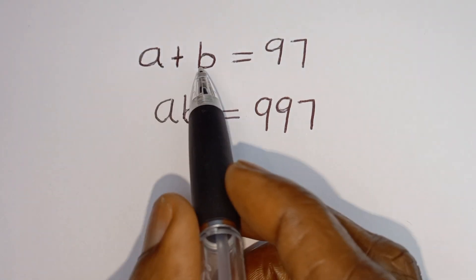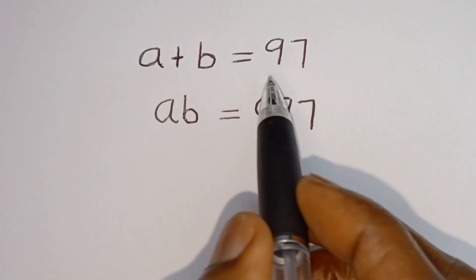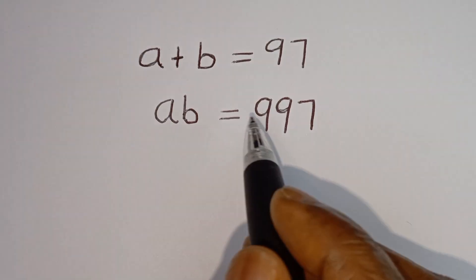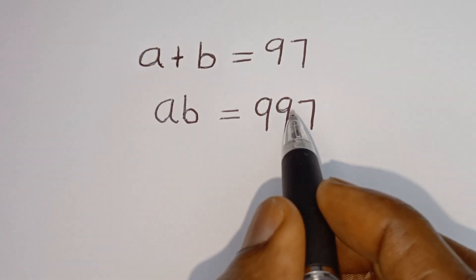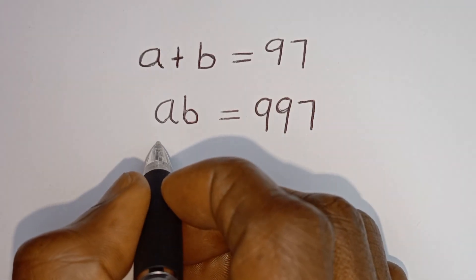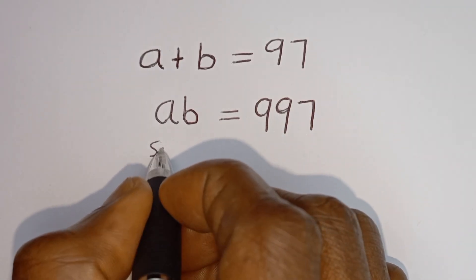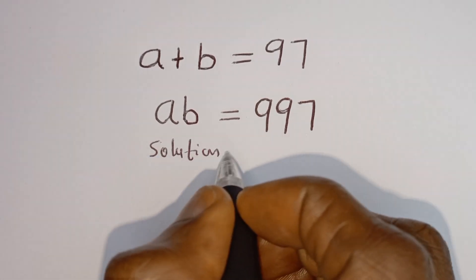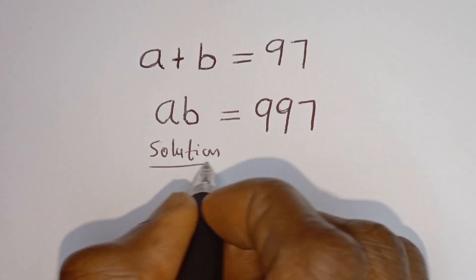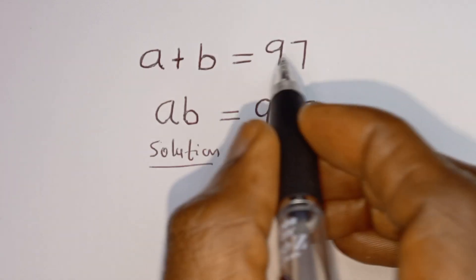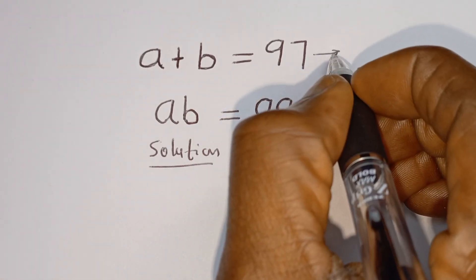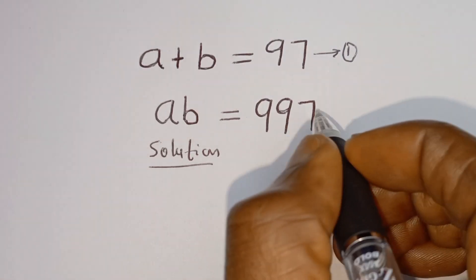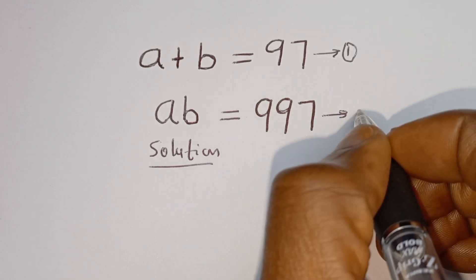Hello. How to solve for a and b in this equation: a plus b is equal to 97 — this is equation 1 — and ab is equal to 997 — this is equation 2.